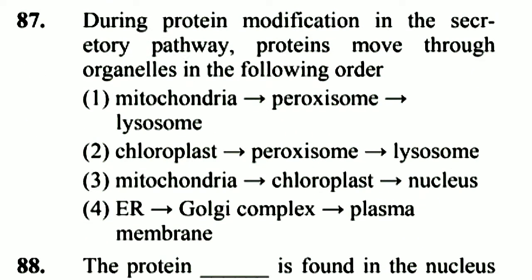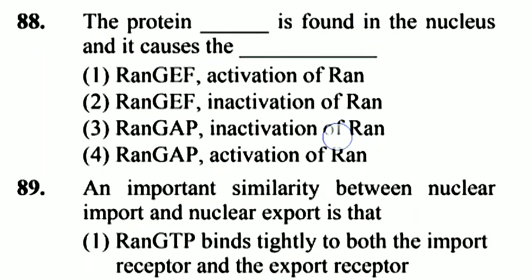Question 87: During protein modification in the secretory pathway, proteins move through organelles in the following order: ER → Golgi complex → plasma membrane. Option 4 is right.